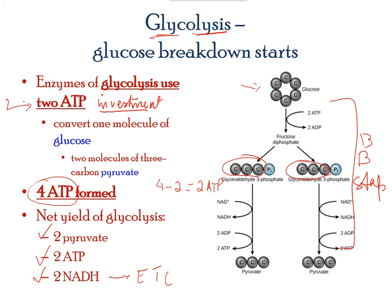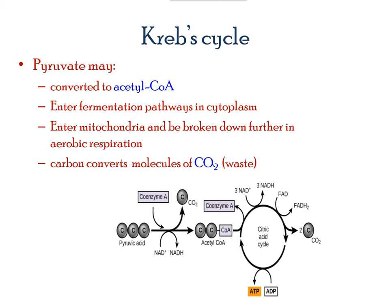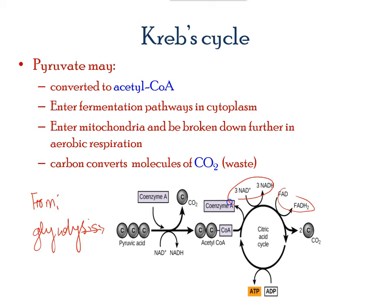The pyruvate molecule formed by glycolysis enters the citric acid cycle. Various configurational changes take place and side products are released: three NADH, one FADH2, carbon dioxide, and one ATP molecule. Since there are two pyruvate molecules at the end of glycolysis, there are two Krebs cycles for each glucose molecule.